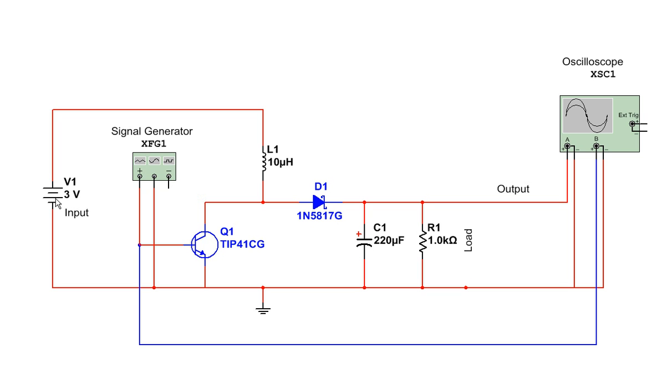So, we've got a 3V battery input here, a signal generator and a switching transistor here, a 10µH inductor, a Schottky diode and a 220µF capacitor. And then this resistor here is just a load, and this is an oscilloscope.